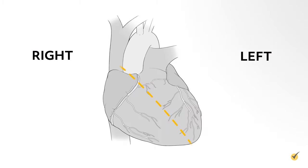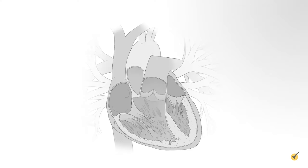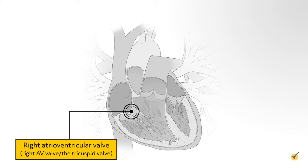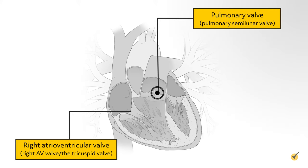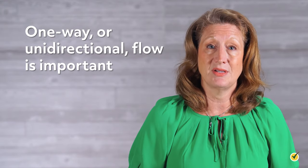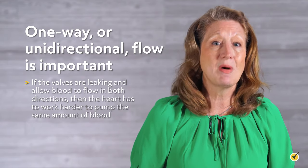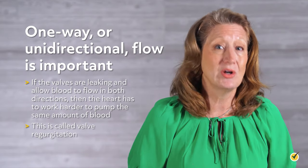When we refer to the right side of the heart, we're referring to the side in relation to the right side of a person's body. The left side of the heart is on the left side of the body. The heart also has four one-way valves: the right atrioventricular valve, also called the right AV valve or tricuspid valve; the pulmonary valve or pulmonary semilunar valve; the aortic valve; and the left atrioventricular valve, also called the left AV valve or mitral bicuspid valve. One-way flow is important — if valves leak and allow blood to flow in both directions, the heart has to work harder. This is called valve regurgitation.